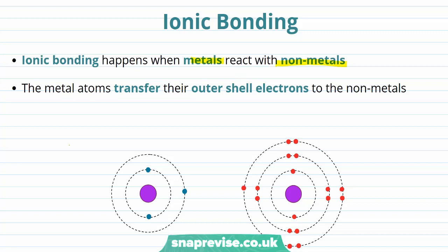If you've seen our video on ions, you'll know that metals generally lose electrons to form positively charged ions known as cations. In the formation of an ionic bond, the metal atoms transfer their outer shell electrons to the nonmetals.